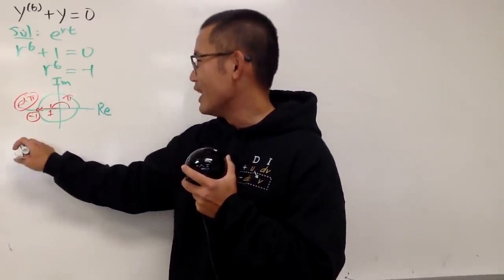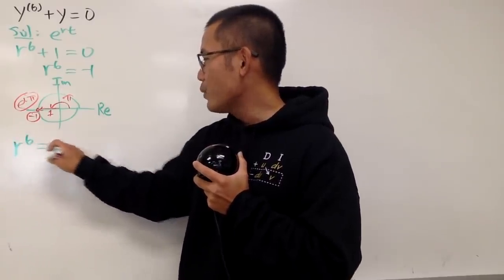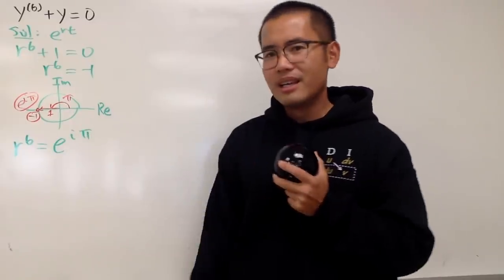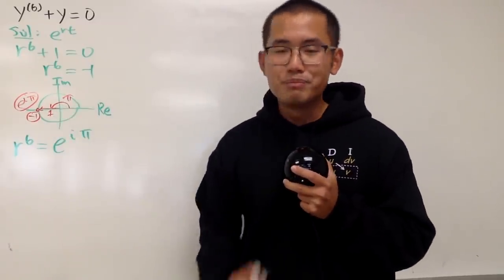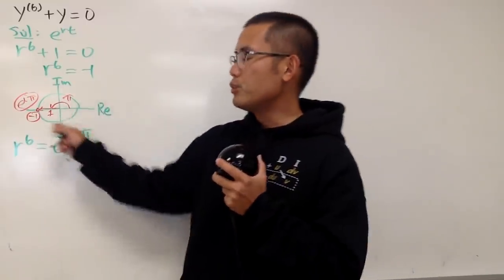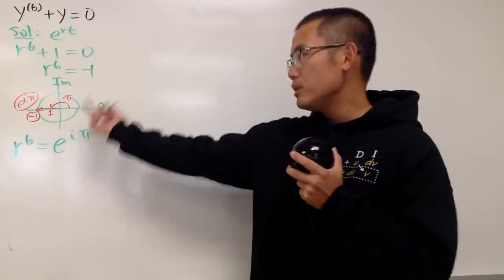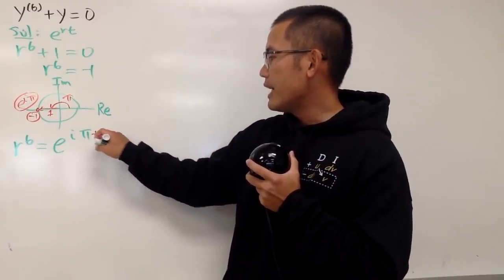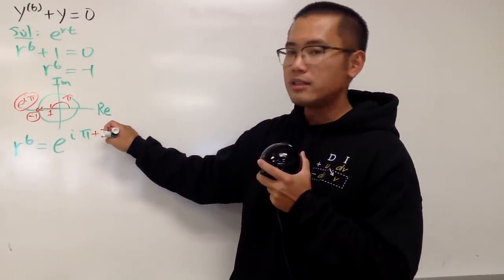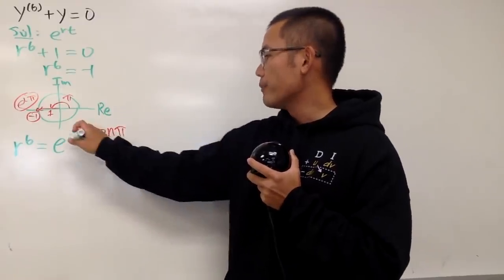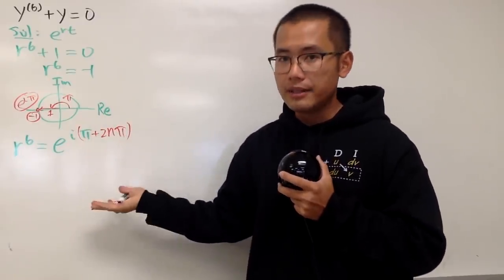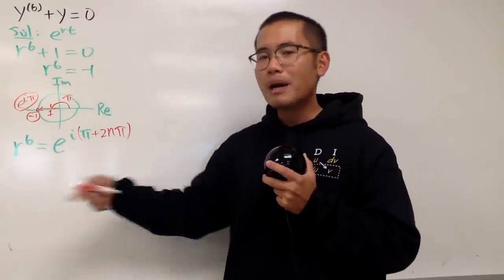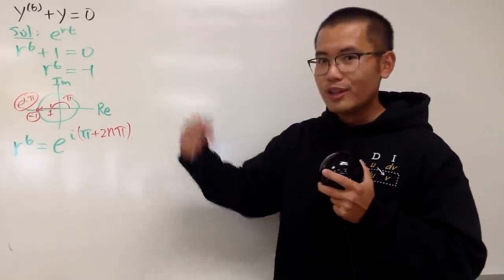We have now r to the 6th power equals e to the i pi. But the problem is, is this the only angle to make this work? No, because you can keep rotating every 2 pi, or maybe go backwards as well. So the truth is, you have to look at the pi and add a multiple of 2 pi. So we put down 2n pi. You may have pi, 3 pi, 5 pi, and so on — and also the backwards situation.